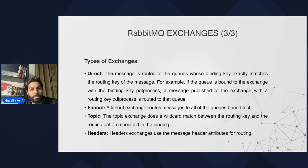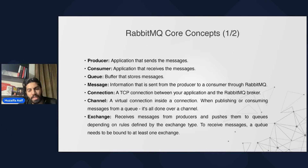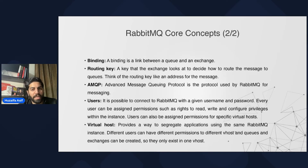Here is a summary of those exchange types. Now let's look at RabbitMQ core concepts: a producer sends the message; a consumer consumes the message; a queue is a buffer that stores the messages; a message is the information being sent; a channel is a virtual connection inside a connection used when publishing or consuming messages from a queue — it's all done over a channel. An exchange routes messages to queues. A binding is the link between a queue and an exchange. A routing key is the key the exchange looks at to decide how to route the message — think of it like an address for the message.